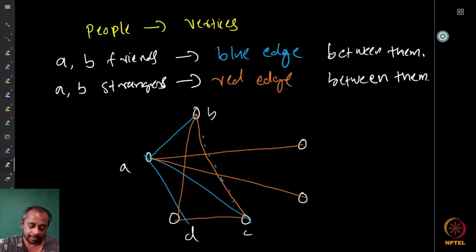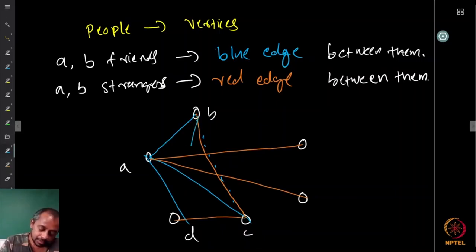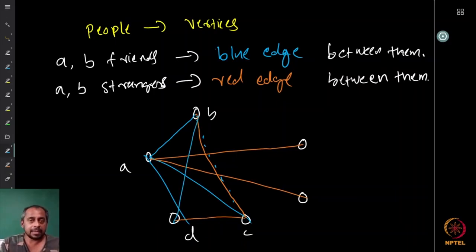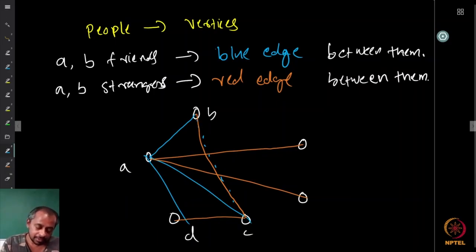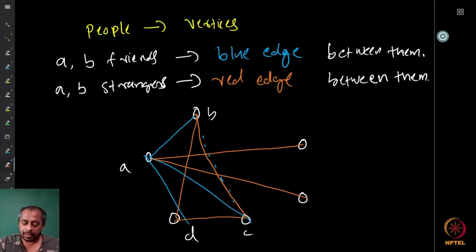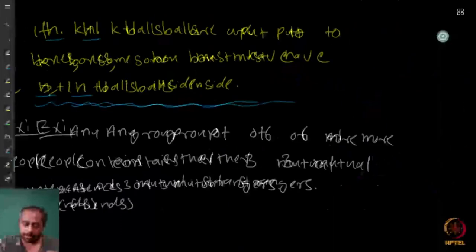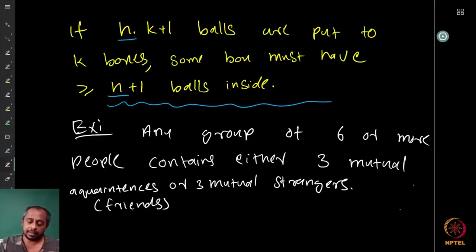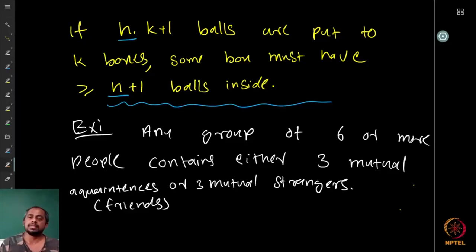So assume BC is red. Similarly if CD is blue we get a blue triangle, so it must be red. If BD is blue we again get a blue triangle, so it must be red. But then B, C, D form a red triangle — three mutual strangers. So whether or not we have a blue triangle, we always have either a blue or a red triangle: three mutual friends or three mutual strangers.